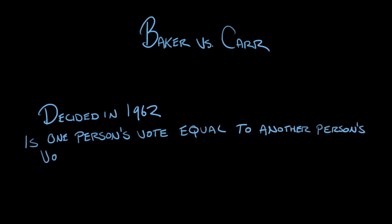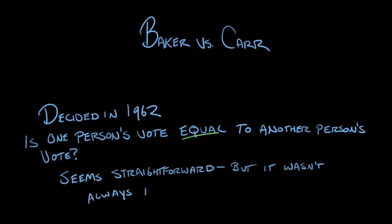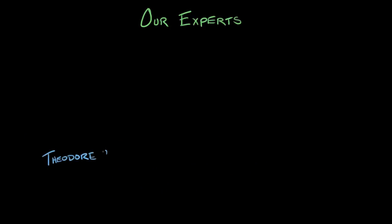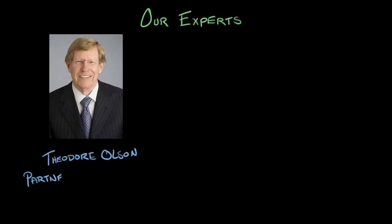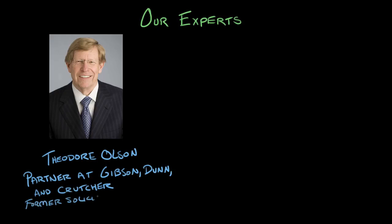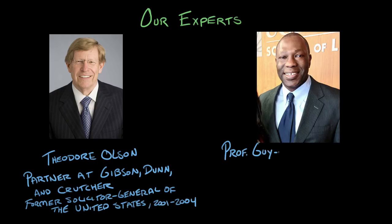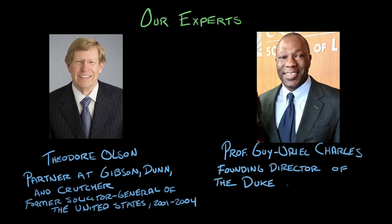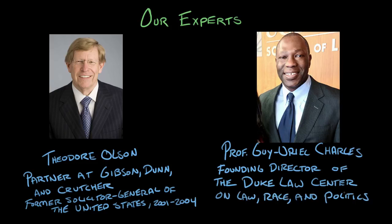That seems pretty straightforward to us now, but as we'll learn in this video, before Baker v. Carr, it wasn't always the case. To learn more, I talked with two experts. Theodore Olson is a partner at the law firm of Gibson Dunn and served as Solicitor General of the United States from 2001 to 2004. Guy Charles is the Edward and Ellen Schwartzman Professor of Law and the founding director of the Duke Law Center on Law, Race, and Politics.